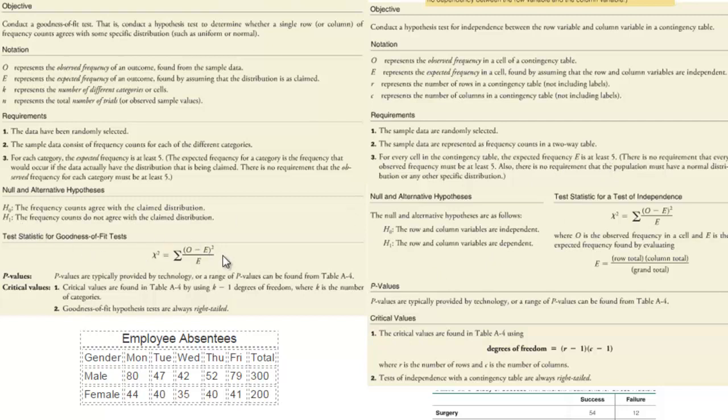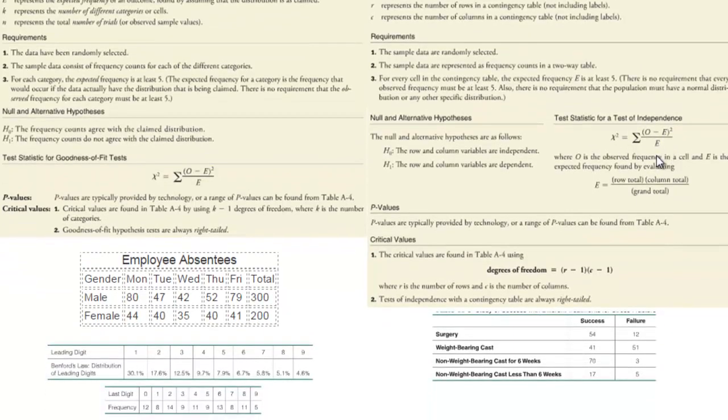Here is our test statistic. Observed minus expected squared over expected. It is the same exact thing. The only difference is when we have rows and columns your expected is calculated slightly different. For these, the expected is well if we are comparing each, then these are kind of our expected but we have to do a little math to it. These would be our observed frequencies and then these would be our expected distributions.